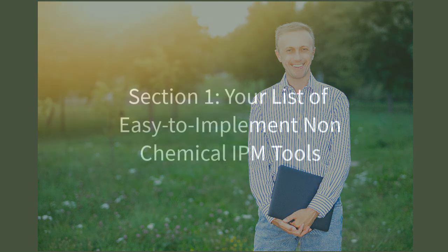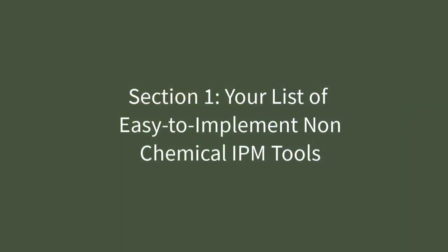Here are the sections that your personal IPM workbook will have. Section one will include a list of easy to implement non-chemical IPM tools. IPM is an integrated approach — it doesn't rely just on chemical sprays but also uses other non-chemical tools as well. You'll have a list of those tools at your fingertips to refer to when you're faced with a fruit tree problem or challenge.